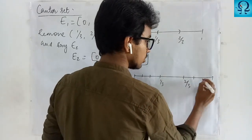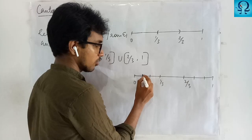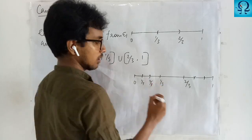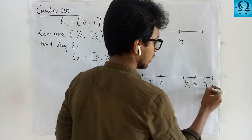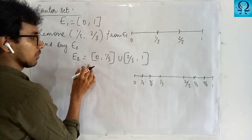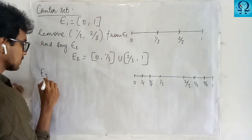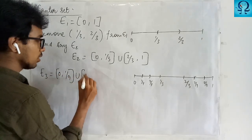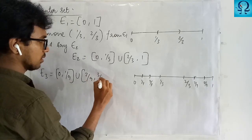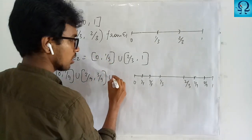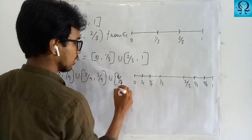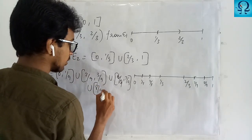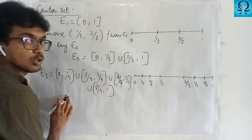Again, we are going to divide these intervals into 3 parts and remove the middle ones. So we remove (1/9, 2/9) and (7/9, 8/9). After removing these from E2, we get E3, which is [0, 1/9] union [2/9, 3/9] union [6/9, 7/9] union [8/9, 1].